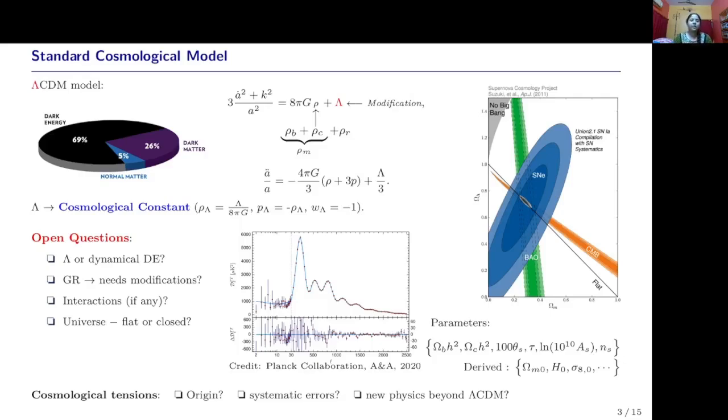Do we need modifications to general relativity on cosmological scales, or is there any presence of a non-gravitational interaction or exotic interaction between dark matter and dark energy? Right now, one of the most pressing issues in cosmology today is the rising tensions and anomalies within the standard cosmological framework. We do not know what are the origins of these tensions - do they indicate systematic errors in measurement or new physics beyond Lambda CDM?